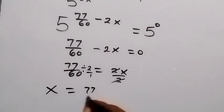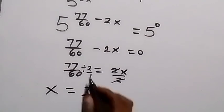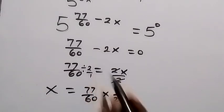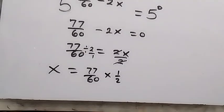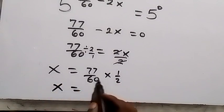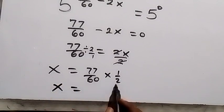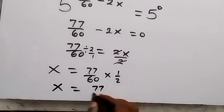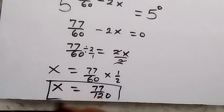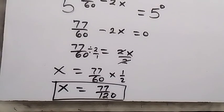Dividing 77/60 by 2 is the same as multiplying by 1/2, giving us x equals 77 over 120. So the value of x in this problem is 77 over 120. Then we check.